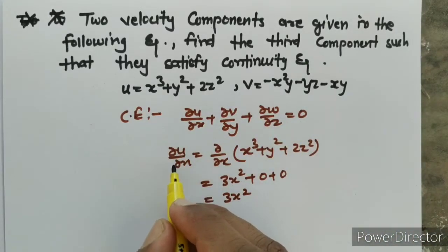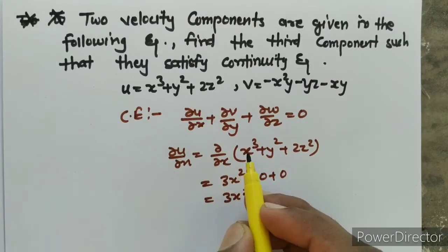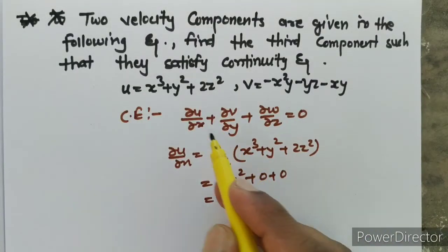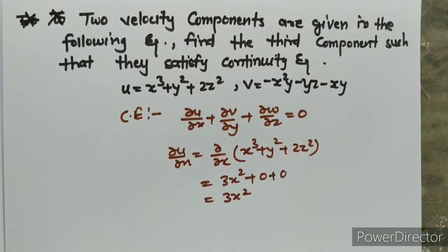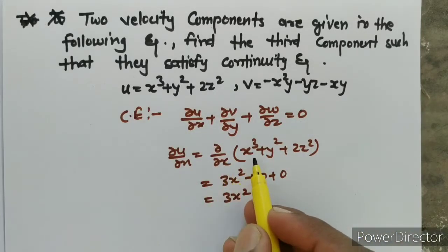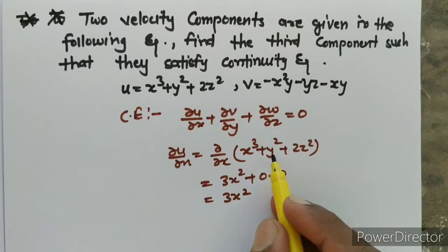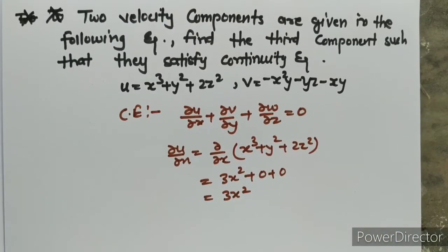So, del u upon del x — del upon del x. We put the value of u here. u was given as x cubed plus y squared plus 2z squared. We differentiate with respect to x, giving 3x squared; the other terms are 0.